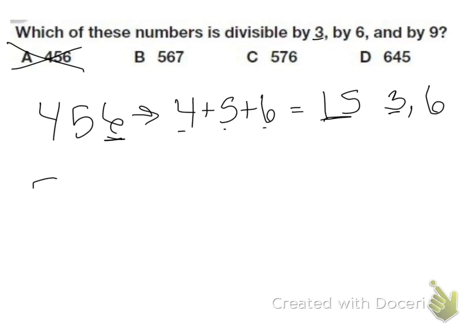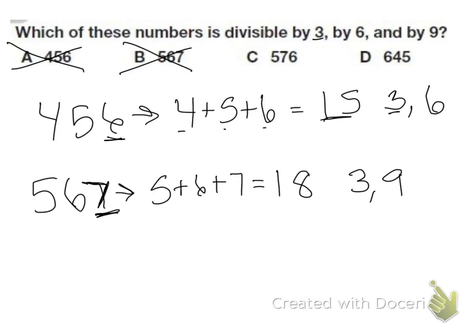Let's get B. We have 567. So we do 5 plus 6 plus 7. So 5 plus 6 is 11, plus 7 is 18. 18 is divisible by both 3 and 9, but if you look, this is an odd number, so I can't divide it by 2. So this number cannot be divided by 6, so it's not that one.